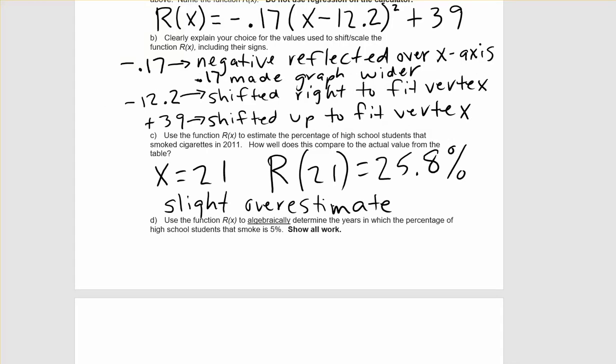And what we can see is that we get a value of about 25.8 percent according to our model. Taking a look at our table, our table said that in 2011 we had 25 percent of high school students smoking. So this is a slight overestimate of the actual value for that year, but it is still pretty close.